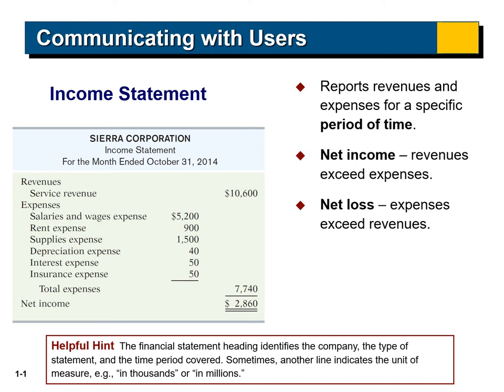In this exercise we have only service revenue as revenues, which is $10,600. Then we list the expenses: we have salaries and wages, rent expense, supplies expense, depreciation expense, interest expense, and insurance expense. The total of expenses is $7,740.